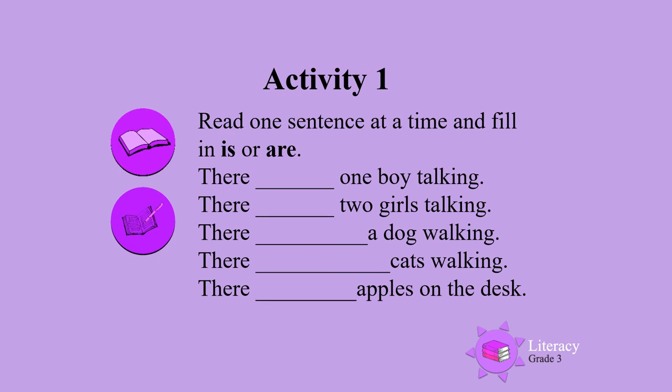Activity 1. Read one sentence at a time and fill in 'is' or 'are.' There ___ one boy talking. There ___ two girls talking. There ___ a dog walking. There ___ cats walking. There ___ apples on the desk.